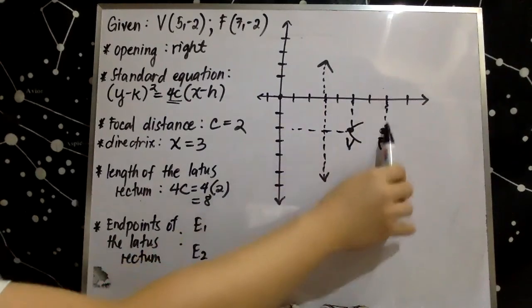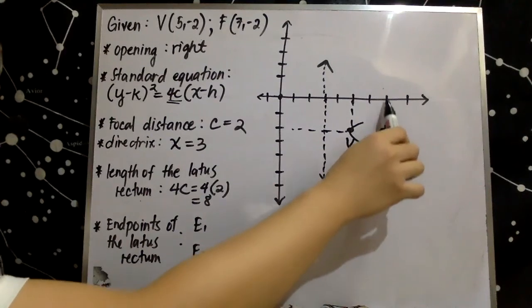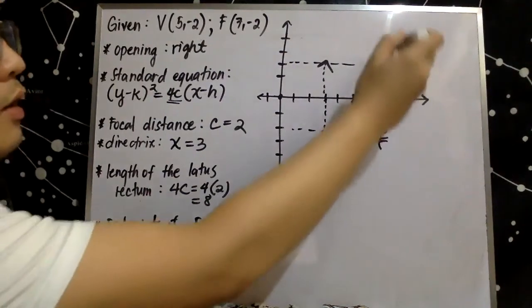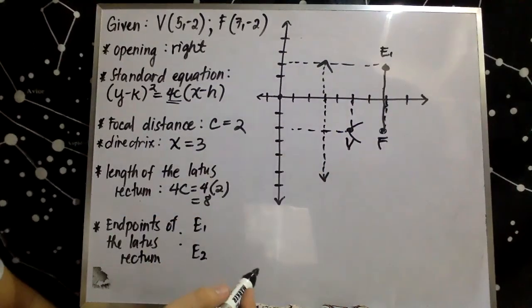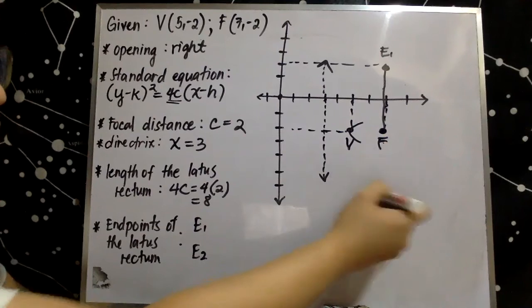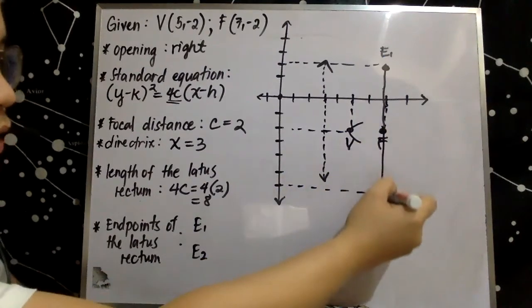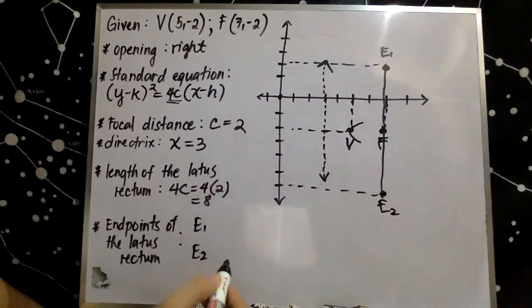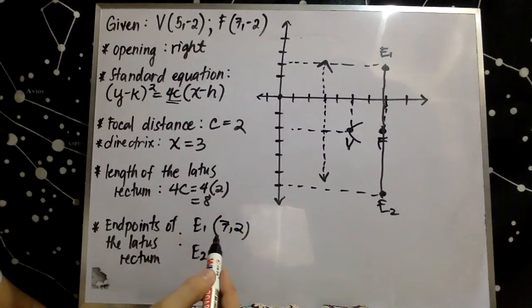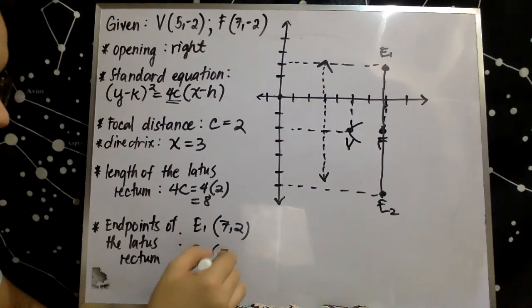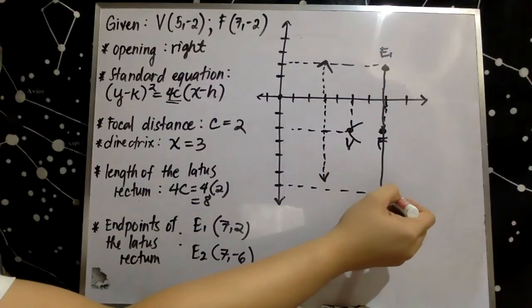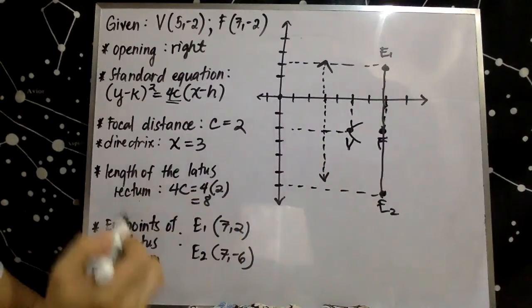We count 4 units above the focus — 1, 2, 3, 4 — and we notate that point as E sub 1, or endpoint 1. We also count 4 units below the focus — 1, 2, 3, 4 — and this is our E sub 2. Thus, the coordinate of E sub 1 is (7, 2) and the coordinate of E sub 2 is (7, -6). This is our latus rectum, and the length of this latus rectum, also called the focal diameter, is equal to 8 units.